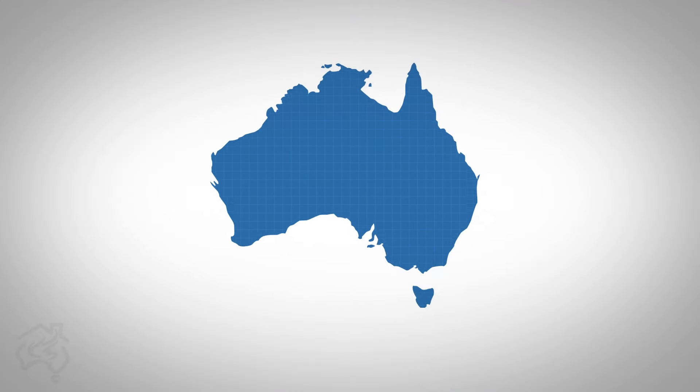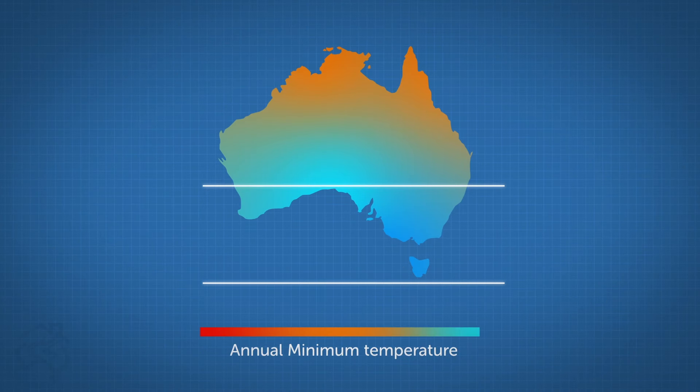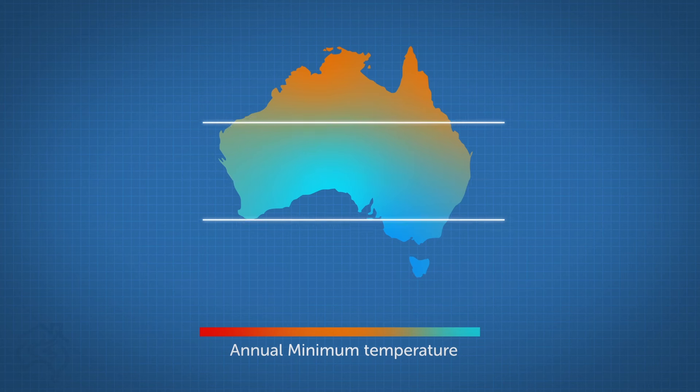The geographic location of your house is also important. Colder climate areas to the south of Australia will have a greater demand than warmer northern climates, placing greater demand on your unit.